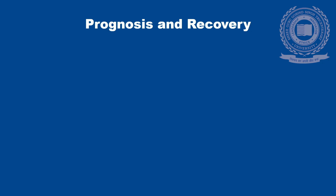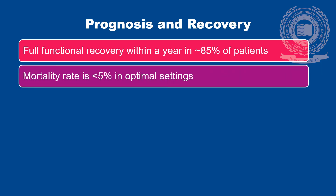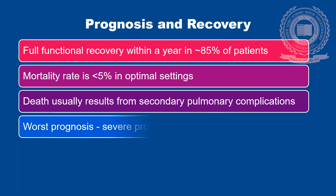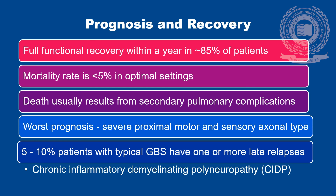Finally, let's discuss about the prognosis and recovery of patients who are suffering from Gulenbady Syndrome. Full functional recovery occurs within a year in about 85% of the patients. Mortality rate is less than 5% in optimal settings. Death usually results from secondary pulmonary complications. Worst prognosis is seen in patients suffering from severe proximal motor and sensory axonal type of neuropathy. 5 to 10% of patients with typical GBS have one or more late relapses and are identified as Chronic Inflammatory Demyelinating Polyneuropathy.